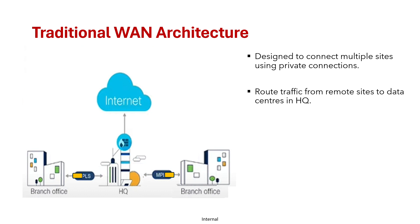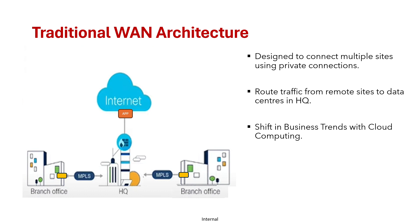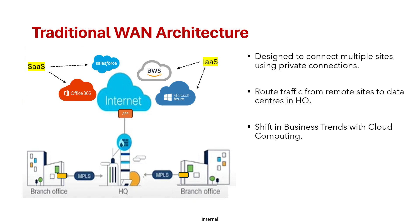This enabled remote users to access applications hosted centrally in the HQ through private MPLS circuits. However, with the rise of cloud computing, business trends shifted — moving applications out of the data center into public clouds and offering cloud services like SaaS (Software as a Service), such as Microsoft Office 365 or Salesforce.com, and IaaS like Amazon AWS, Google Compute Engine, or Microsoft Azure.